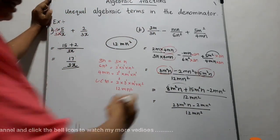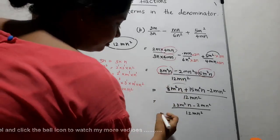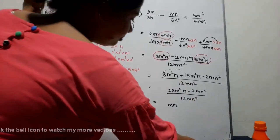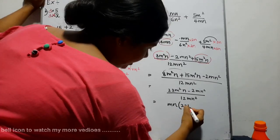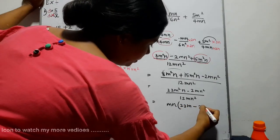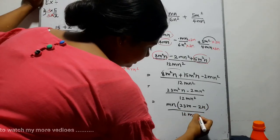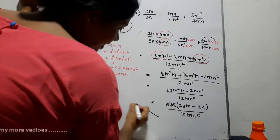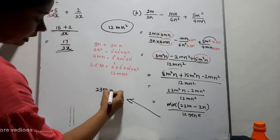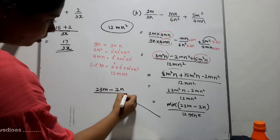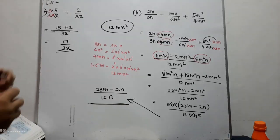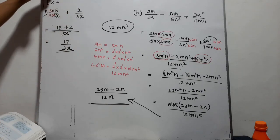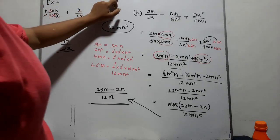Is that the final answer? No — we can factorize further. Looking at the numerator, M and N are common factors. We take MN out of the brackets, giving MN times (23M minus 2N) over 12MN squared. Now we can cancel MN, reducing N squared to N. So the final answer is 23M minus 2N over 12N. I think these two examples are enough to understand how to simplify algebraic fractions with unequal algebraic terms in the denominator.